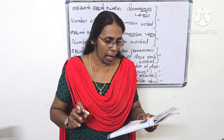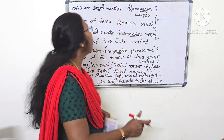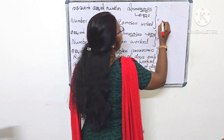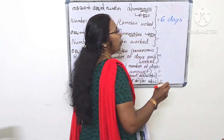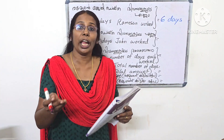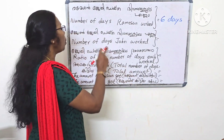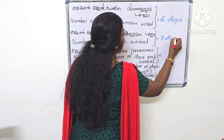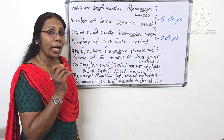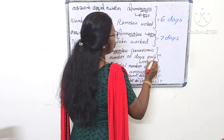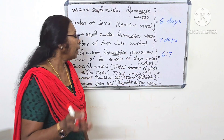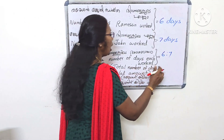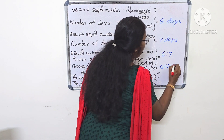Remesha and John took up a job. The number of days Remesha worked is 6 days, and the number of days John worked is 7 days. So the ratio of the number of days is 6 to 7.